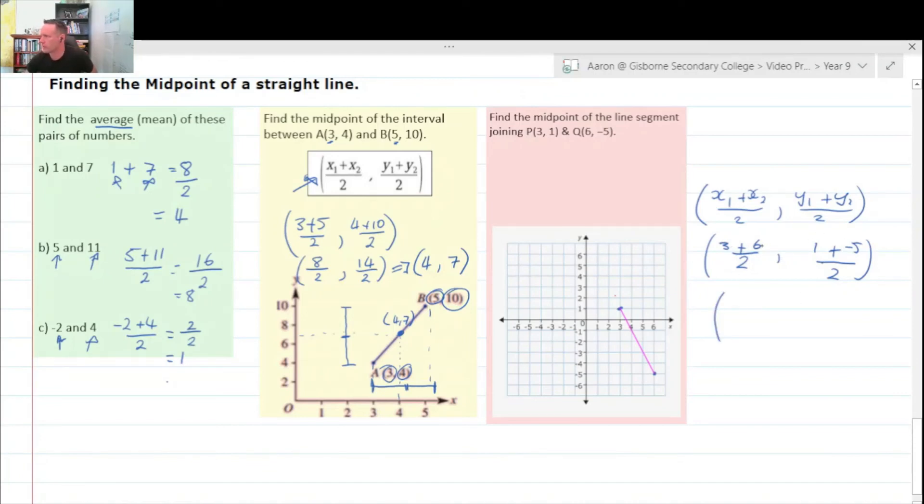I'm going to do one hit now. 3 plus 6 is 9 divided by 2 is 4.5. And 1 plus negative 5 is negative 4 divided by 2 is negative 2.